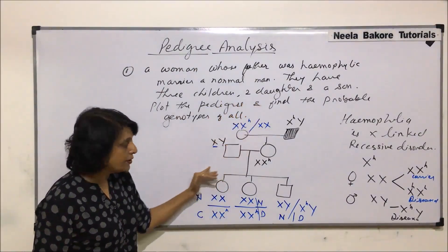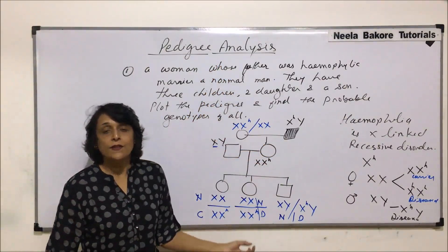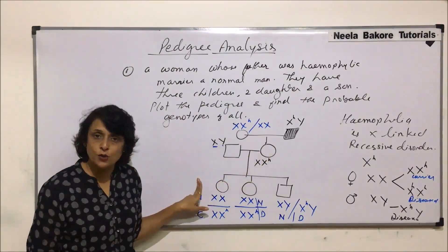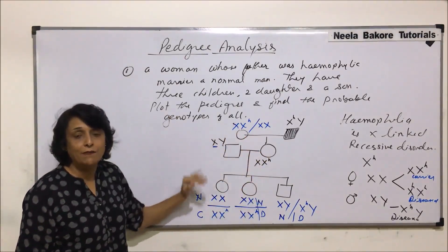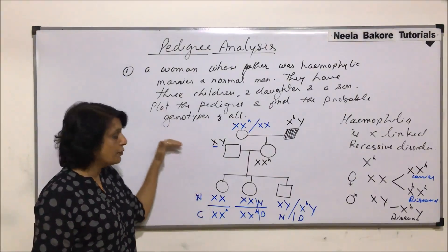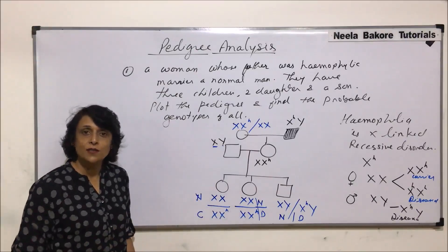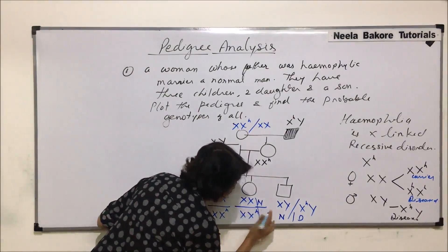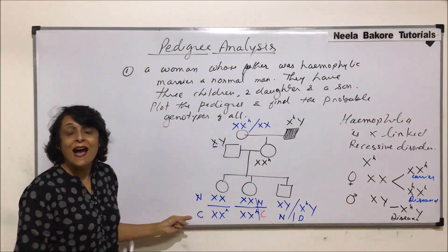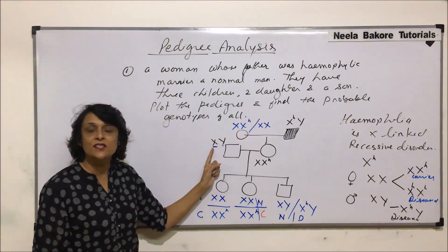Looking at the question, we have plotted the pedigree and interpreted the genotypes of all individuals — the mother, the proband, and the offspring. In an exam multiple-choice context, answer choices might include 100% normal or 100% diseased daughters. However, girls are never going to be diseased here, because they definitely receive one dominant X from their normal father.